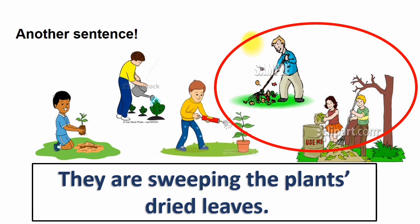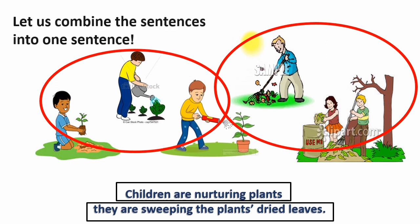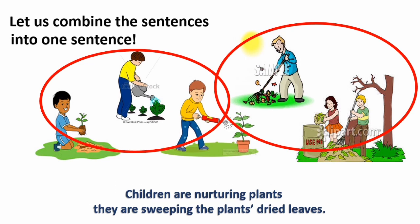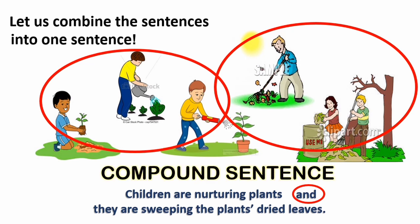Now we have two sentences taken from the given pictures. Let us combine the sentences into one sentence. We can say, children are nurturing plants, and they are sweeping the plant's dried leaves. Notice how we combine the two sentences together. We use 'and' to combine the two sentences. We now have one new type of sentence called a compound sentence.